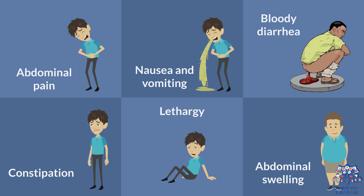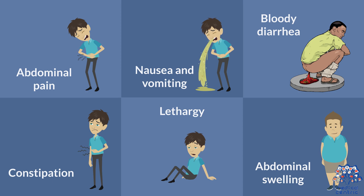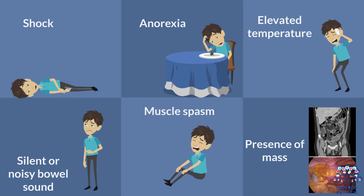Symptoms of acute abdomen include abdominal pain, nausea and vomiting, bloody diarrhea, constipation, lethargy, abdominal swelling, shock, anorexia, elevated temperature, silent or noisy bowel sounds, muscle spasm, and presence of a mass.